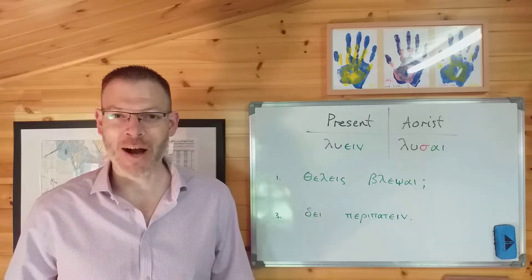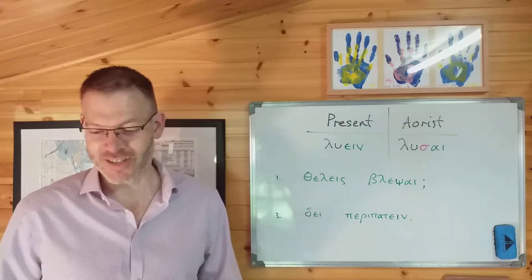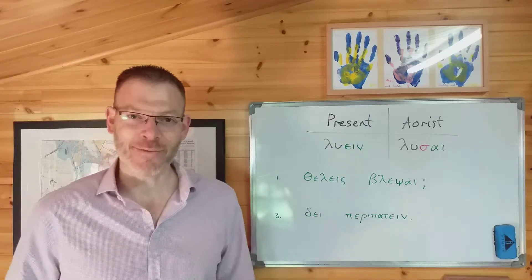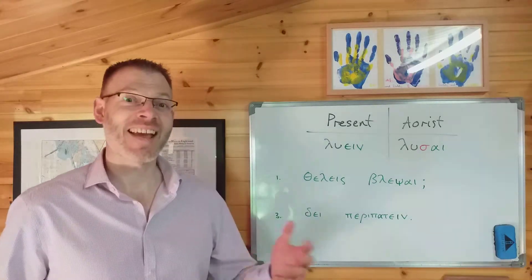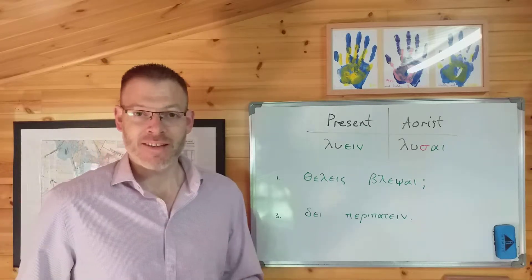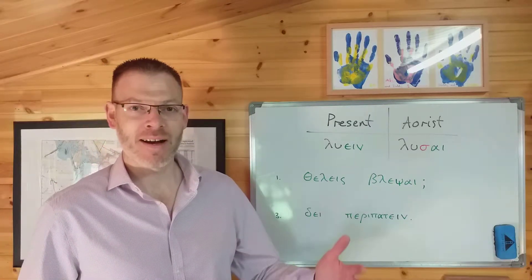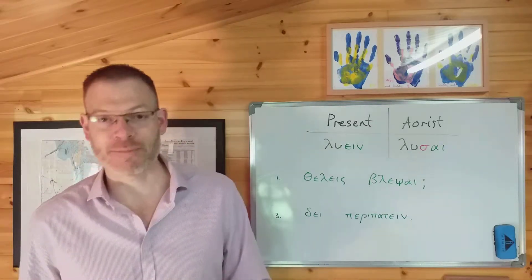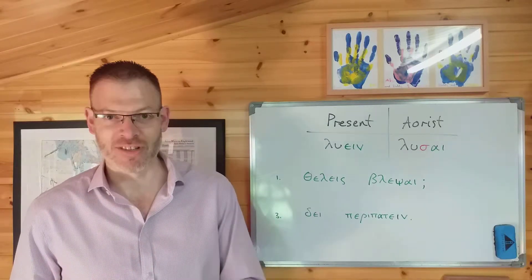Just a quick reminder of where we are. We're in chapter 7, which is the chapter on the other moods, entitled Moods. We'd already done the indicative — that's verbs like luo, lueis, luei and so on — which indicate a state of affairs or ask a question about a state of affairs. So far in this chapter we've looked at the imperative, giving commands, in the previous couple of videos. The infinitive comes here and then the participle comes next, and much later in the book we'll do the subjunctive.